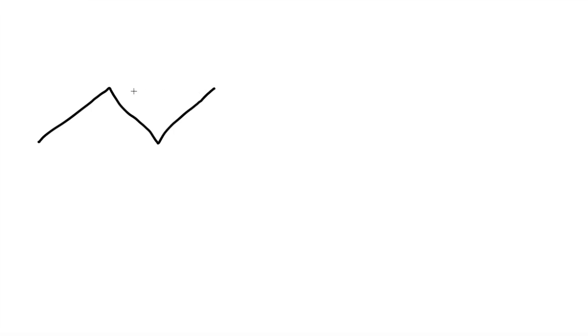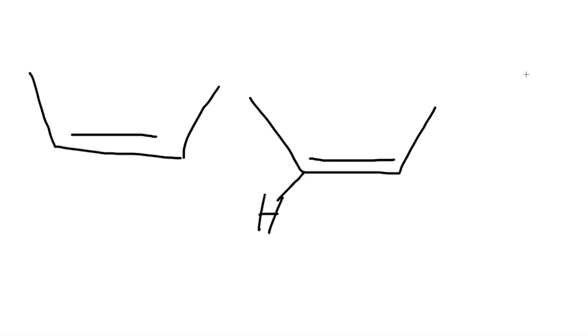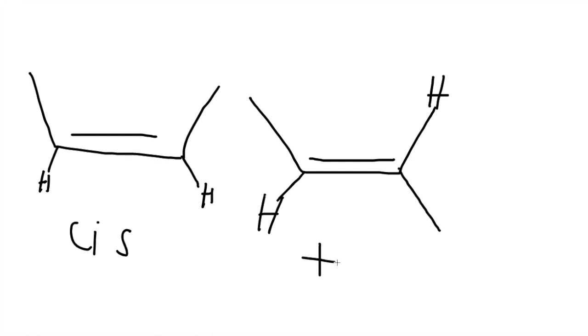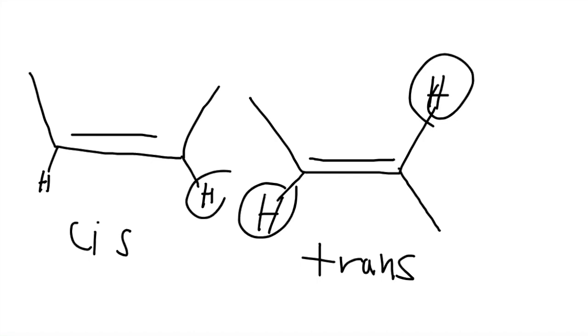For this video we will be talking about E/Z formation. E/Z formation only happens for alkenes — something with a double bond. Before we determine E/Z formation, we should know these two stereoisomers. On the left we have groups on the same side, called cis, and on the right it's called trans. We only use cis and trans if they have hydrogens. But what if we don't have hydrogens in the problem?